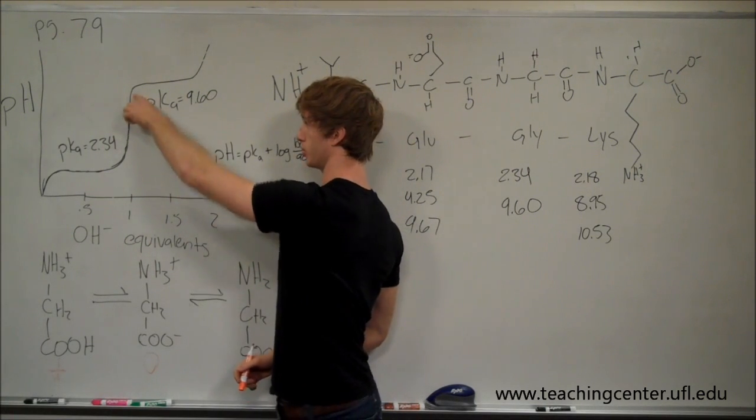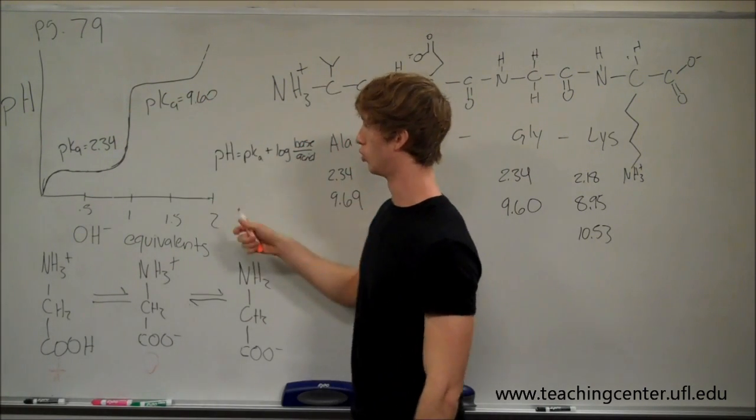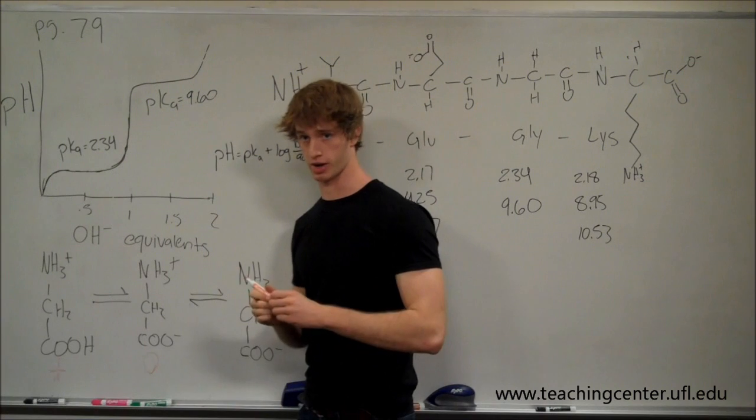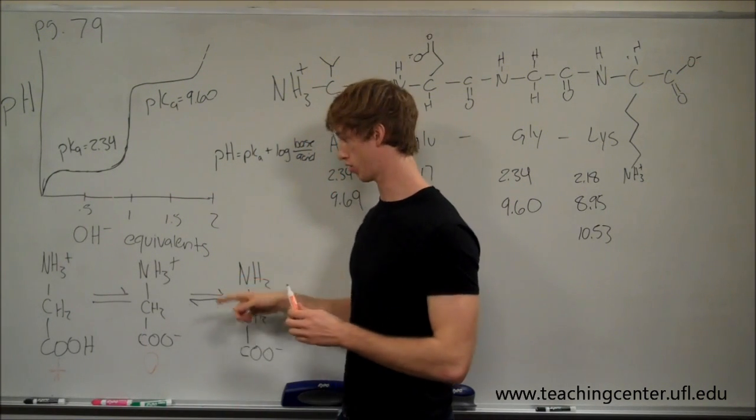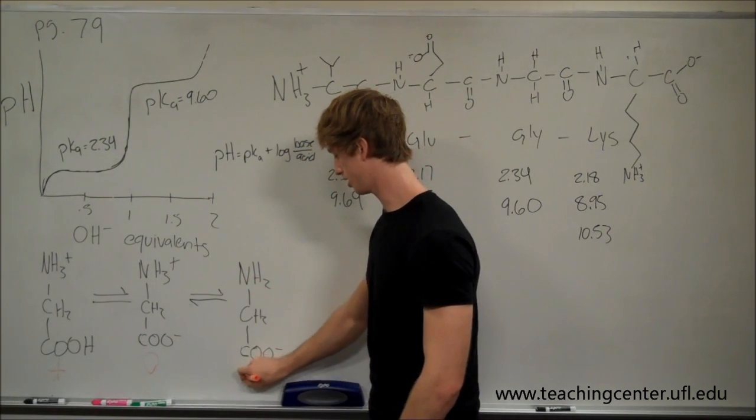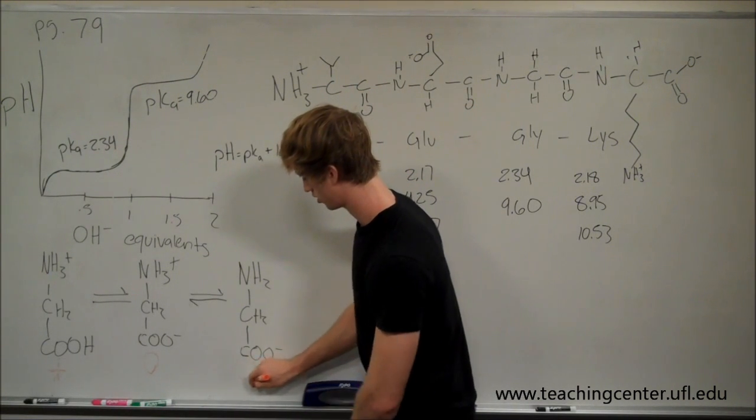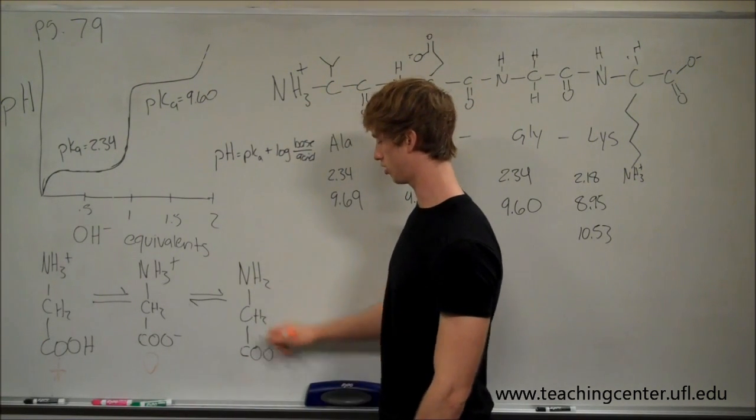It's going to raise the pH again, we get to this region, and then here's the second buffer region where the same process is going on, only this time the hydroxide is taking a hydrogen from this amine group to create a negative form of glycine.